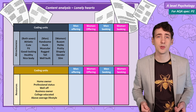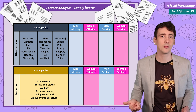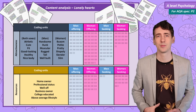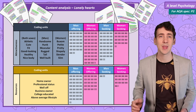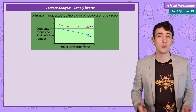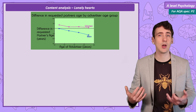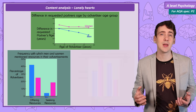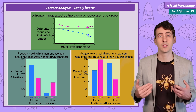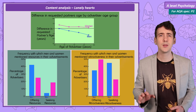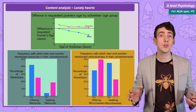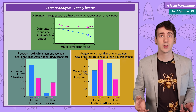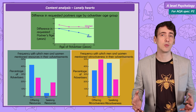Coding frames for wealth included terms referring to home ownership, professional status, being well off, a business owner, university educated, or suggesting an above average lifestyle. When this qualitative data was turned into quantitative data, it backed up the evolutionary theory. Men looked for significantly younger mates and females significantly older mates. Men showed off their resources more than women, women asked for resources more than men, women mentioned their own attractiveness more than men, and men asked for attractive partners more than women. So you can see from this example how a large set of qualitative data that wasn't created for the researchers can be used by psychologists, turned into quantitative data, and provide evidence to a research question.